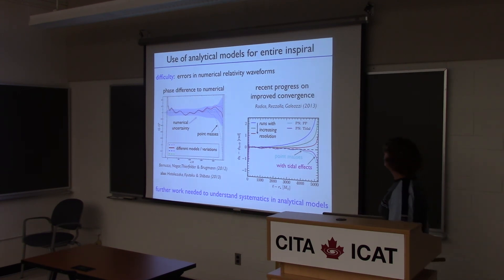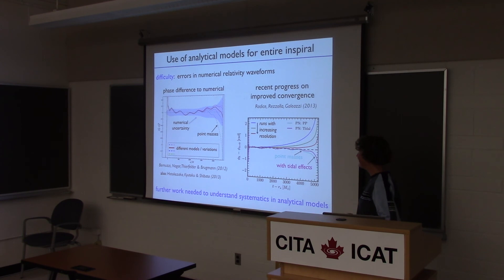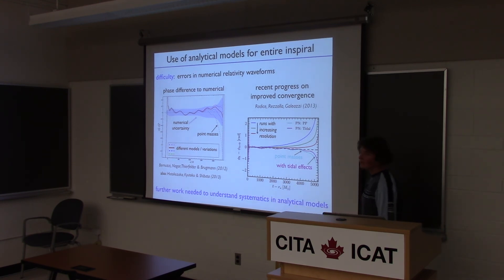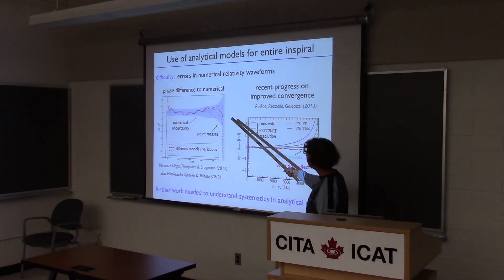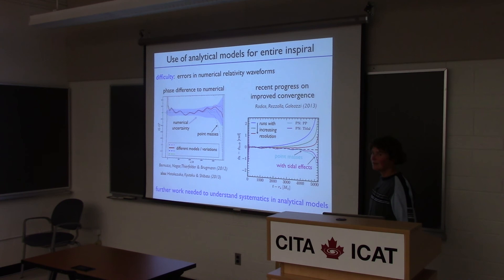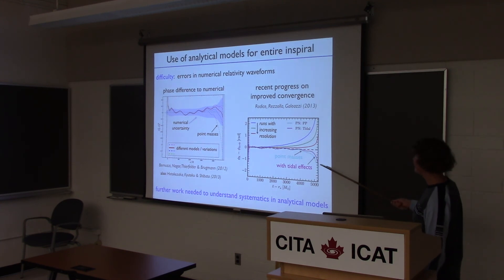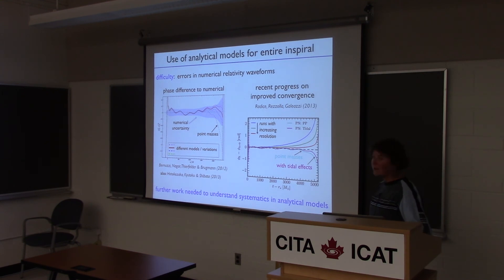To see how well the analytical models perform and whether we're getting the right physics of the tidal effects, one again has to compare to numerical relativity simulations. The problem is that many of the simulations don't have good error estimates, and if they do, the errors are still fairly large. So from what is available in the literature, the results are currently inconclusive. The shaded region is the numerical error, and the dashed regions are different models of tidal effects — they're pretty much all consistent with the data, so one cannot favor one model over another. This is definitely an area where further work is needed.